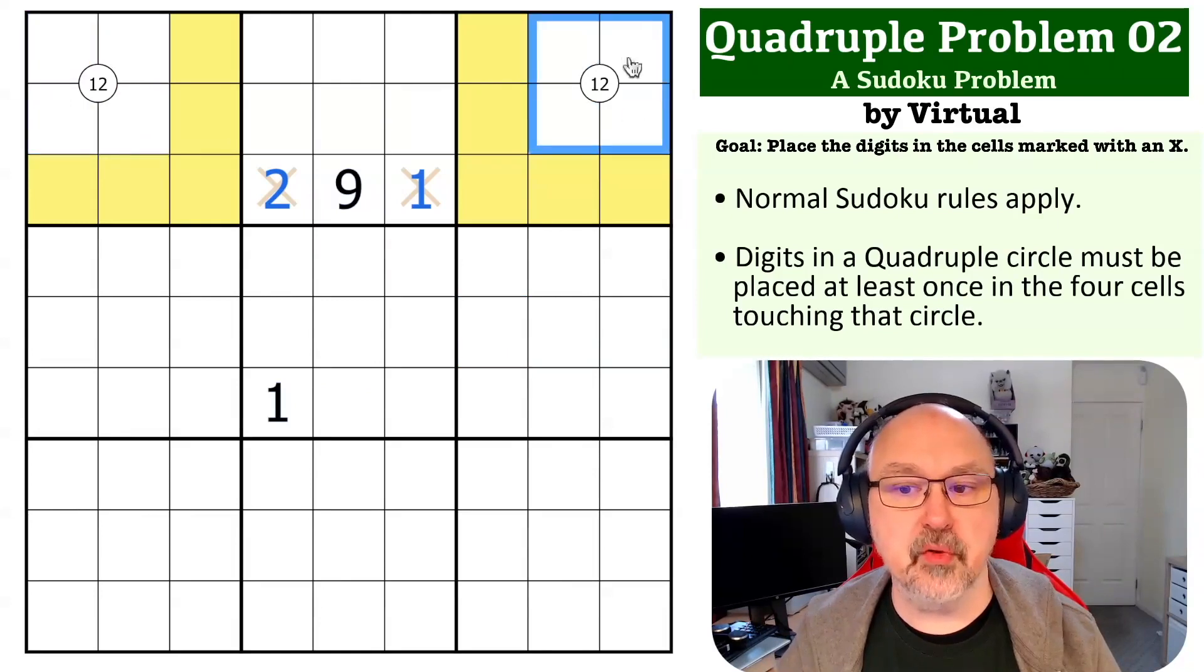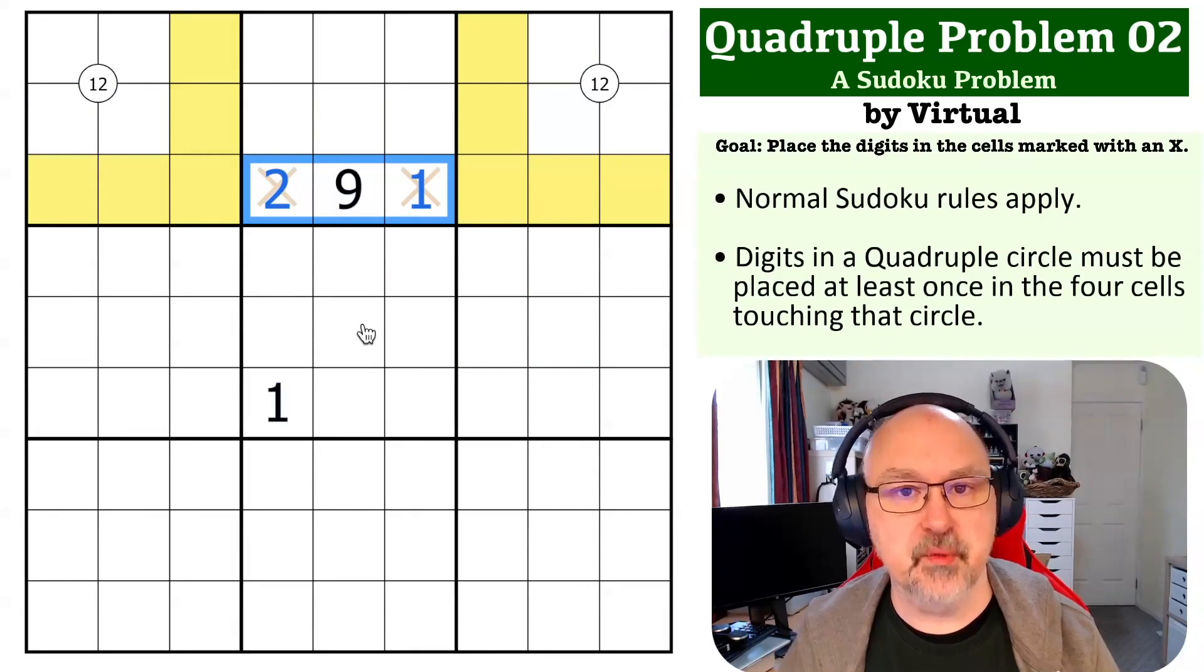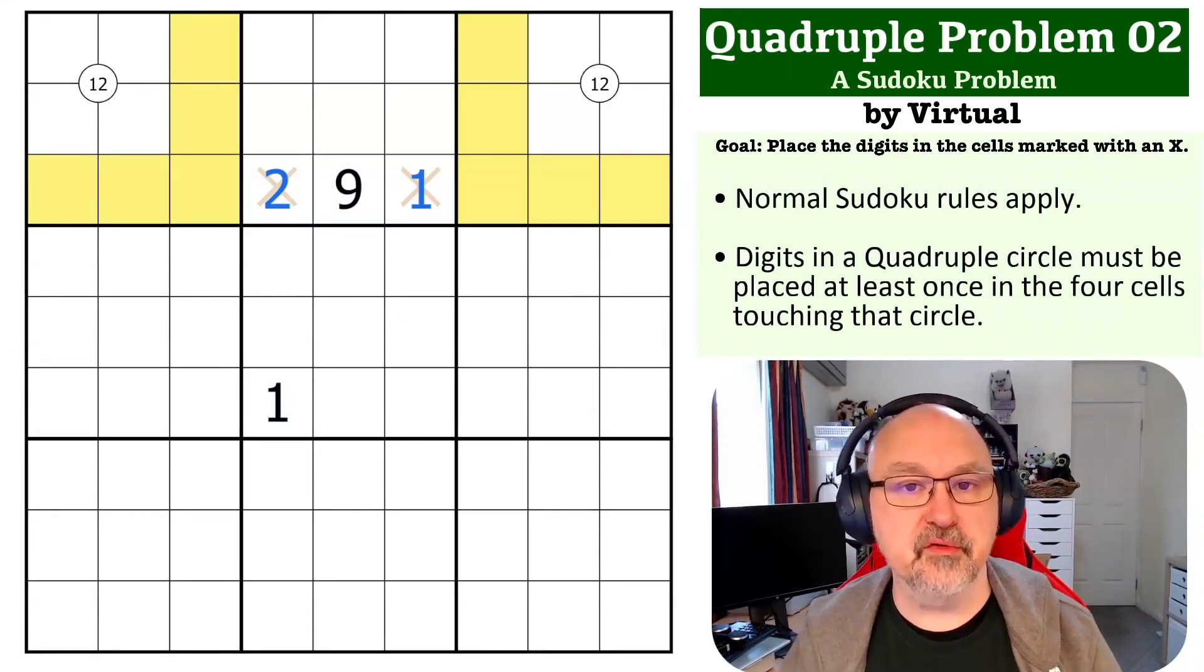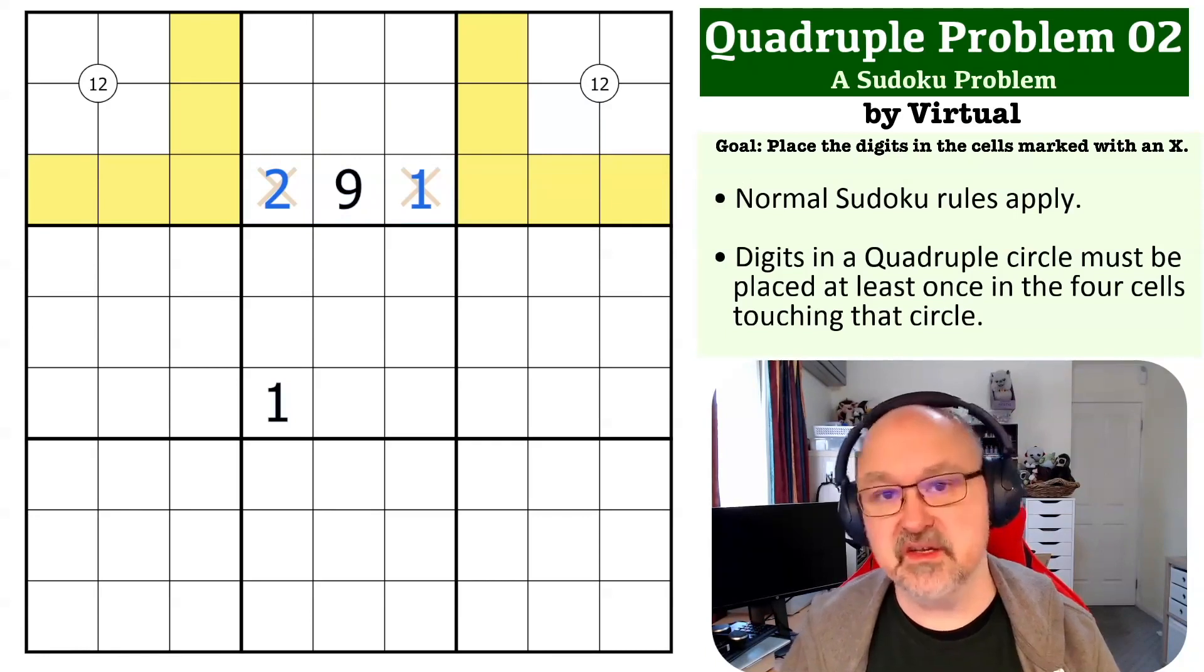When you get quadruple clues with pointing similar digits, you can very quickly determine where things go. So that is a very common quadruple trick and definitely worth calling out in a Sudoku problem.